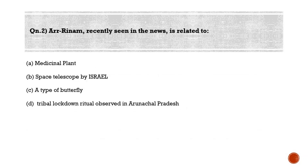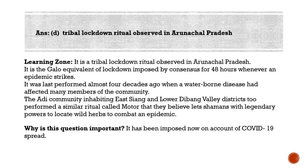Second question: 'Rinam,' recently seen in the news, is related to — option A: medicinal plant, option B: space telescope by Israel, option C: a type of butterfly, option D: tribal lockdown ritual observed in Arunachal Pradesh. The correct answer is option D — it is a tribal lockdown ritual observed in Arunachal Pradesh. The Gallo community is one of the 26 major tribes of Arunachal Pradesh, dominating the West Siang district, and has been recognized as a Scheduled Tribe.